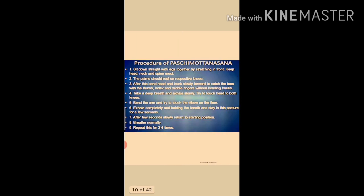Procedure of Paschimottanasana: Sit properly and stretch both legs forward, keeping toes and heels together. Exhale completely from both nostrils and hold the toes of both legs with both hands. Try to put your forehead on your knees and remain in this position as long as possible. Slowly return to normal position and repeat this asana three to four times.